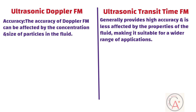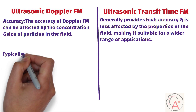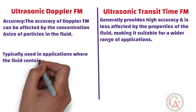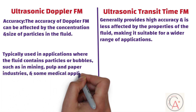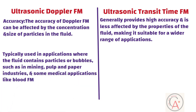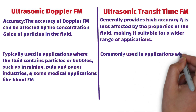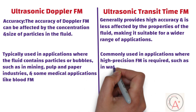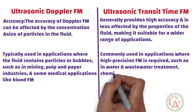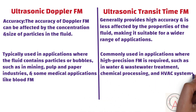In terms of application, ultrasonic Doppler flow measurement is typically used in applications where the fluid contains particles or bubbles, such as in mining, pulp and paper industries, and some medical applications like blood flow measurement. On the other side, ultrasonic transit time measurement is commonly used where high precision flow measurement is required, such as in water and wastewater treatment, chemical processing, and HVAC systems.